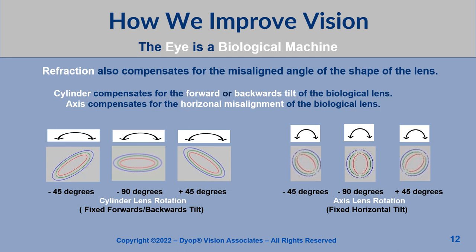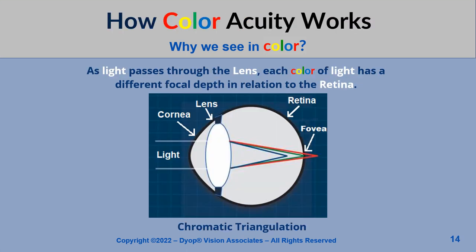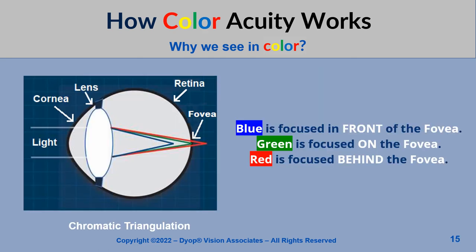Axis compensates for the horizontal misalignment of the biological lens. But why do the cone-shaped photoreceptors in the fovea respond to the specific colors of red, green, and blue? As light passes through the lens, each color of light has a different focal depth in relation to the retina. Blue is focused in front of the fovea, green is focused on the fovea, and red is focused behind the fovea.